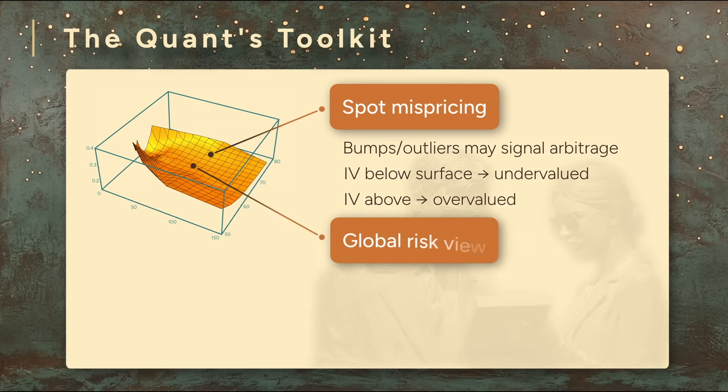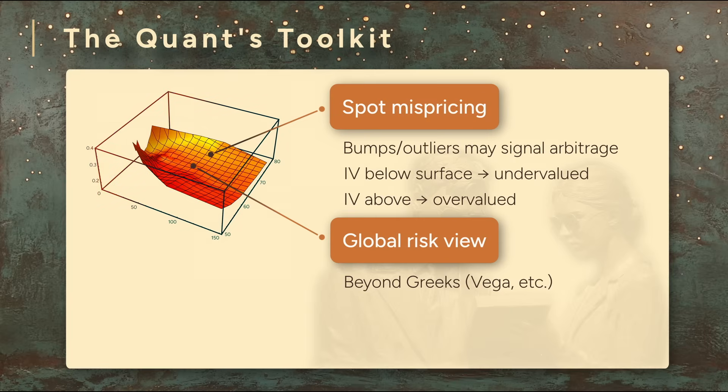Second, while quants do rely on the Greeks, like Vega, for day-to-day risk management, the volatility surface provides a global view of the risk landscape. It's a topographical map of how volatility changes across different strikes and expirations. That broader view helps quants understand how their portfolio might be affected by changes in volatility over time.